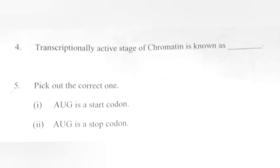Question 4. Transcriptionally active stage of chromatin is known as euchromatin. Question 5. Pick out the correct one. Answer 1: AUG is a start codon.